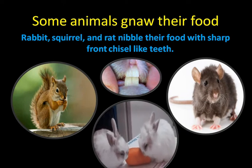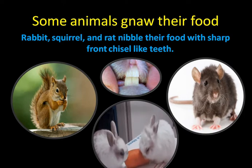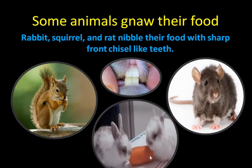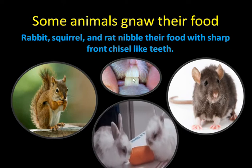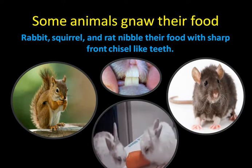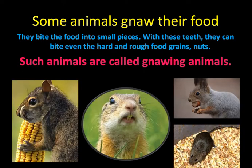There are some animals which gnaw their food. Gnaw means to bite the food into very small bites with the front teeth. Animals like squirrel, rat or rabbit first nibble their food with their front chisel-like teeth. These chisel-like teeth help to bite the food into very small pieces. Such animals which use their front two chisel-type teeth to bite the food are called as gnawing animals. They bite hard and rough grains or nuts with their chisel-like teeth.